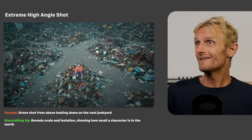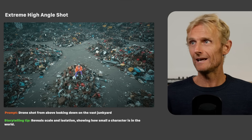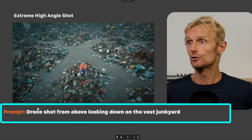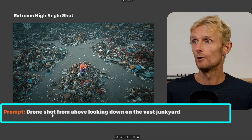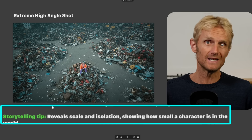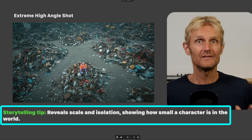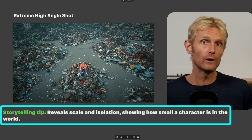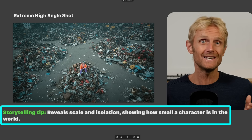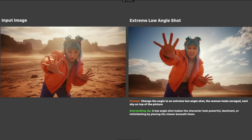You can also create an extreme high angle shot with Nano Banana by prompting 'drone shot from above looking down on the vast junkyard.' The storytelling tip is that this reveals scale and isolation, showing how small a character is in its world.